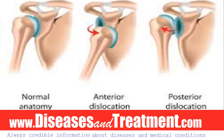Because the glenoid fossa is so shallow, other structures within and surrounding the shoulder joint are needed to maintain its stability. Within the joint, the labrum — a fibrous ring of cartilage — extends from the glenoid fossa and provides a deeper receptive socket for the humeral head. The capsule tissue that surrounds the joint also helps to maintain stability, and the rotator cuff muscles and tendons that move the shoulder provide a significant amount of protection and stability.